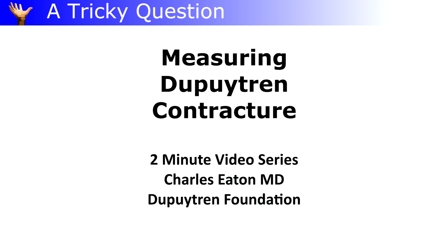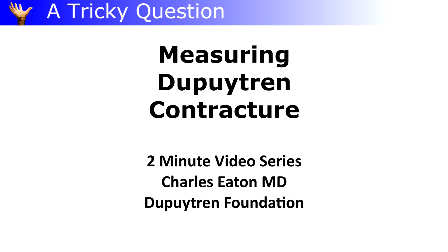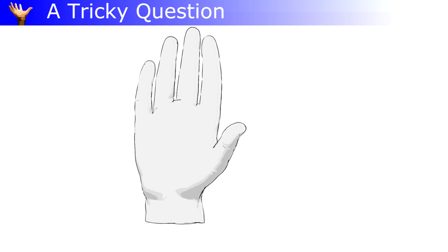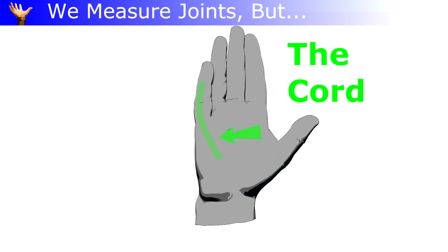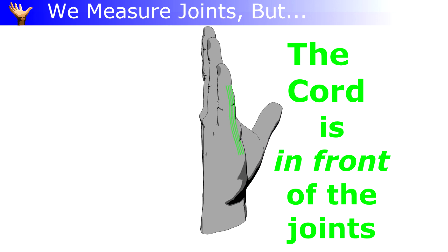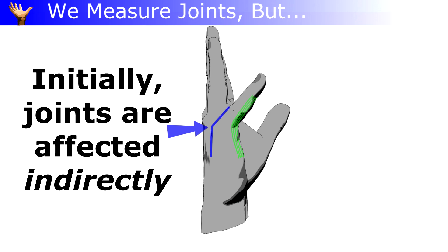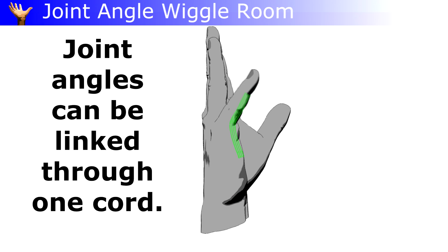How do you put a number on the severity of Dupuytren contracture? How is it measured? It's trickier than you might think. The cord is the issue, but what we look at are the knuckles, which are bent by the cord. One reason it's tricky is that the bend in one joint can depend on the position of the next joint.